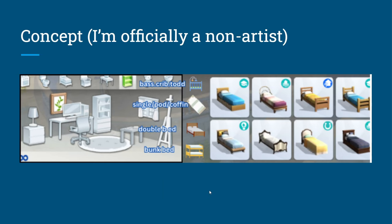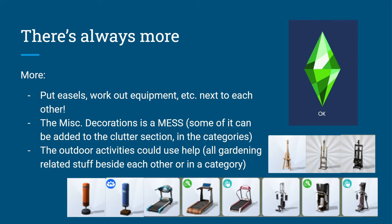There's always more. In the activities section, it would be too much to fully separate by easel, workout stuff, and instruments, but it would be very useful to at least put easels together and workout equipment together — because the easels are very scattered in that category. Can you just put them in the same row, next to each other, from lowest to highest price? I just want them to be together.